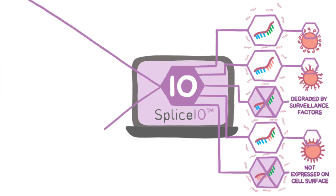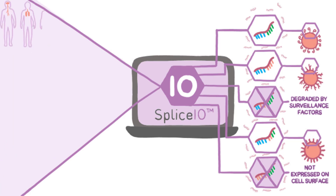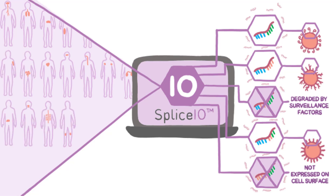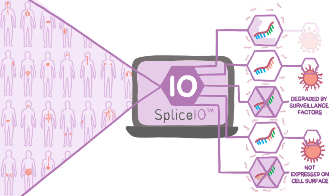In the next step, Splice.io takes a wider look at the human body by scanning through thousands of tumor tissues and different tissue types to ensure that the neoepitopes are only present in cancer cells and not in vital organs or normal tissues. This very important step allows us to predict and avoid toxicity before a potential neoepitope-targeting therapy reaches clinical trials in animal models or human subjects.